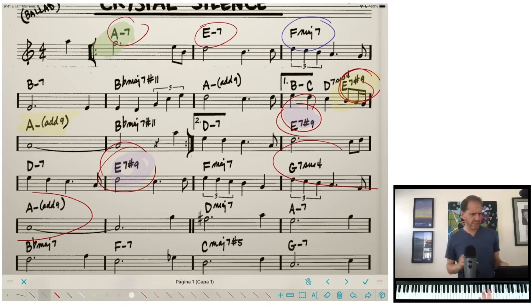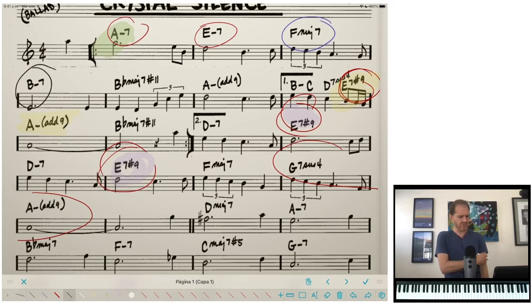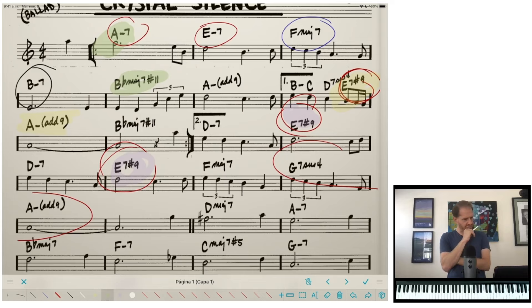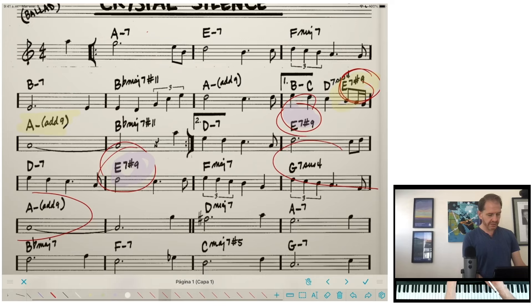And then we really get a curveball if we're thinking in this way of what key are we in. B major 7 sharp 11. That could be related to F major, but not really to the B minor. So why is it that all of these keys, all these chords, feel so related? Well, the answer actually is much more in the melody than it is in the harmony.